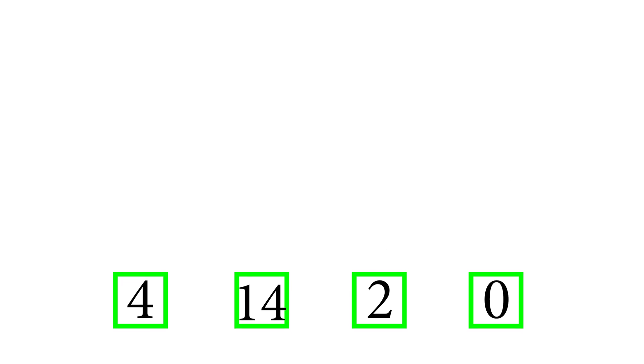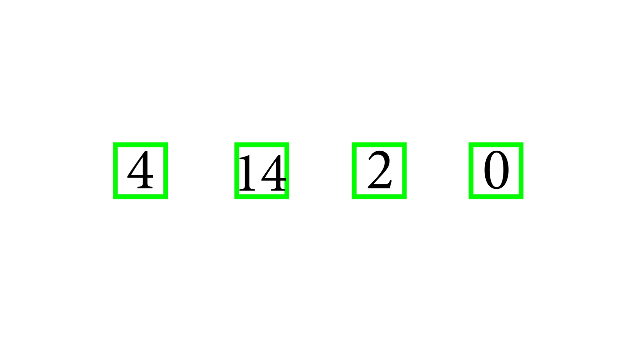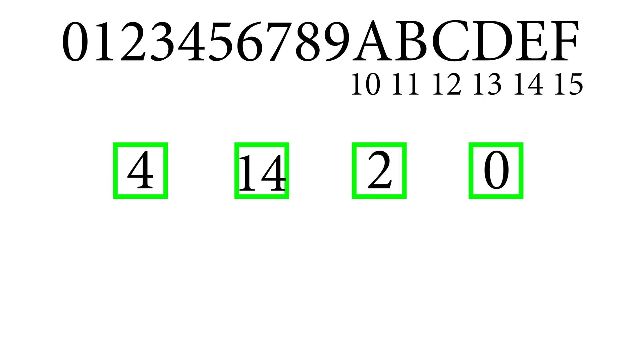So our final number here is four, 14, two, and zero. But you might be asking already, well why is that 14 still there because we only go up to nine when we do these digits, and you are correct. We have to convert that 14 back into a letter. So 14 on here is actually E.